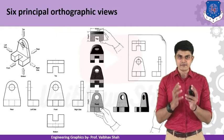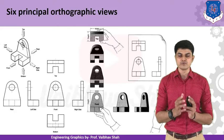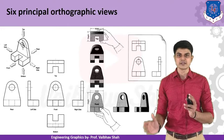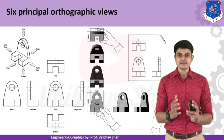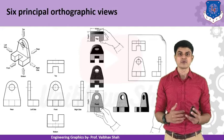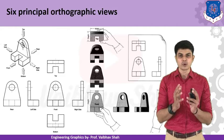I have an object and I will be looking at it from six directions. Looking from the front gives the front view. From the rear direction gives the rear view. From the top direction gives the top view. From the bottom direction gives the bottom view. From the left-hand side gives the left-hand side view. And from the right-hand side gives the right-hand side view. So you have a total of six views. Now let us understand how to take and locate these six views.